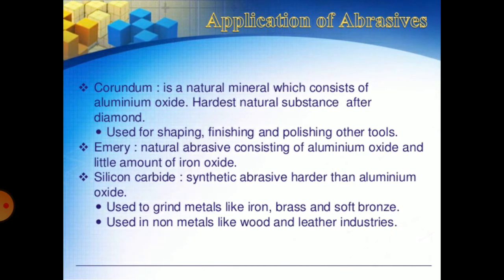Some applications of abrasives: first, corundum is a natural mineral which consists of aluminum oxide, the hardest natural substance after diamond. It is used for shaping, finishing, and polishing other tools. Next is emery, a natural abrasive consisting of aluminum oxide and a little amount of iron oxide. Silicon carbide is a synthetic abrasive harder than aluminum oxide, used to grind metals like iron, brass, and soft bronze.